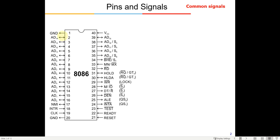Wherever a double-headed arrow is shown, that means it's a bi-directional pin — data can go into the pin and come out of the pin. Wherever there is a single-ended arrow, it means either input is given into the 8086, as in pins 18 and 19, or output is coming from 8086, as in pins 28 and 29.